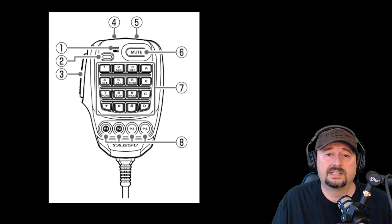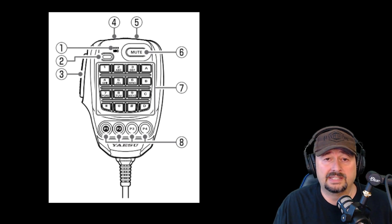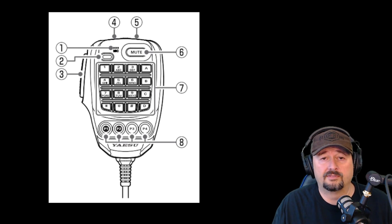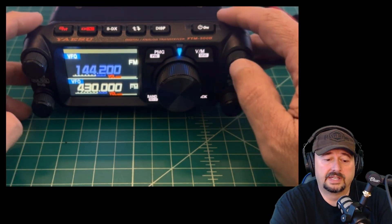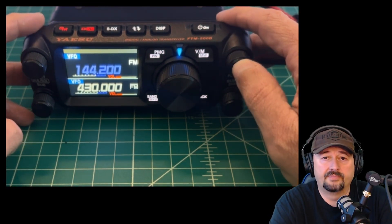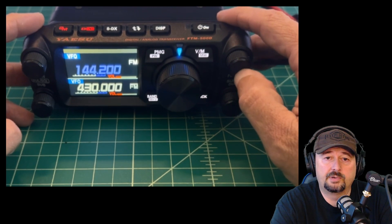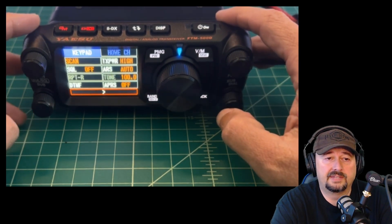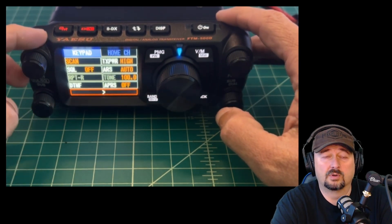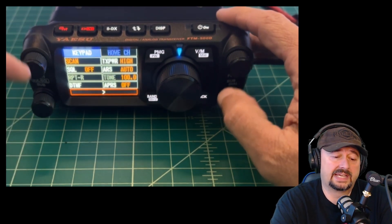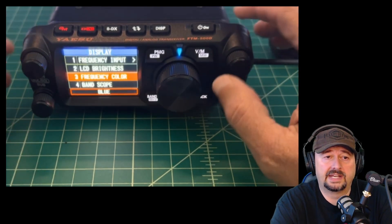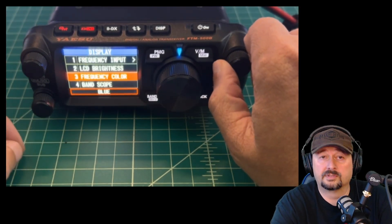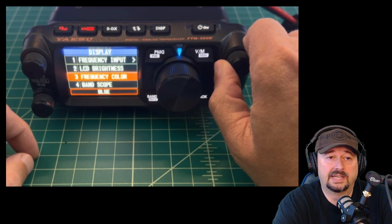Let's go ahead and take a look at how you set these up inside the radio configuration. Here's the interface to our FTM 500. If I push this function knob, that gives me my quick or frequently accessed menu. If I do a long press, then I get the entire menu — all 127 options.